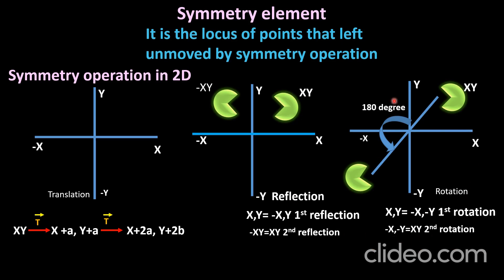The symmetry element is the locus of points left unmoved by the symmetry operation — for example, the axis of symmetry remains unmoved, while the motif moves around this locus point.